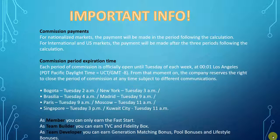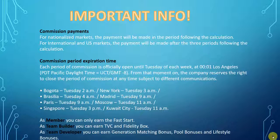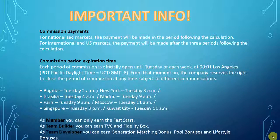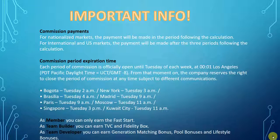Let's wrap up with some very important information — commission payments. For nationalized markets, commission payments will be paid one week delayed, in the commission period following the calculation. For international and U.S. markets, the payment will be made after three weeks following the calculation. For instance, commissions will be closing this coming Tuesday morning, so three weeks from Tuesday morning is when you would get the commissions for this commission period.